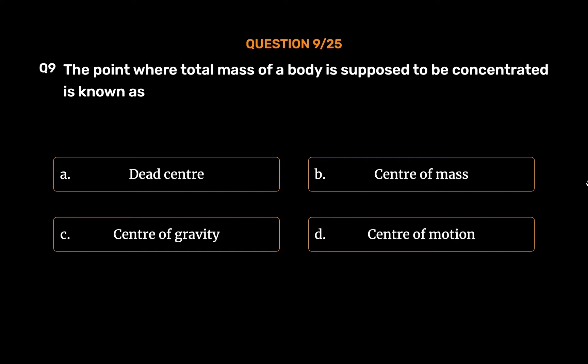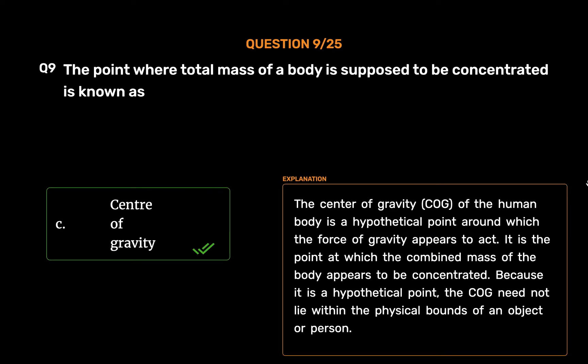The correct answer is Option C: Center of gravity. The center of gravity (C.O.G.) of the human body is a hypothetical point around which the force of gravity appears to act. It is the point at which the combined mass of the body appears to be concentrated. Because it is a hypothetical point, the COG need not lie within the physical bounds of an object or person.